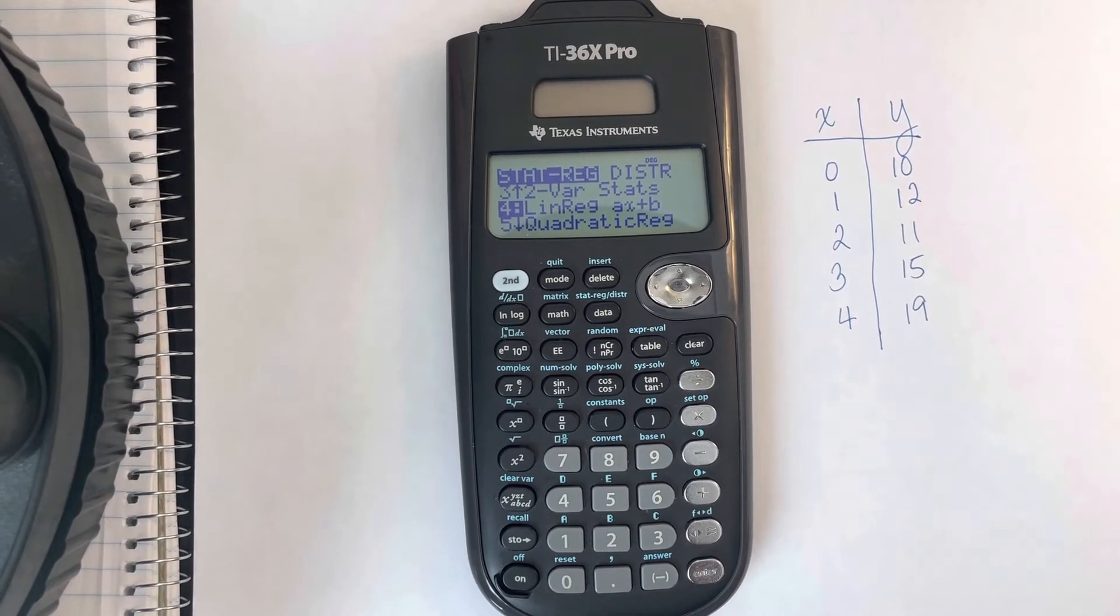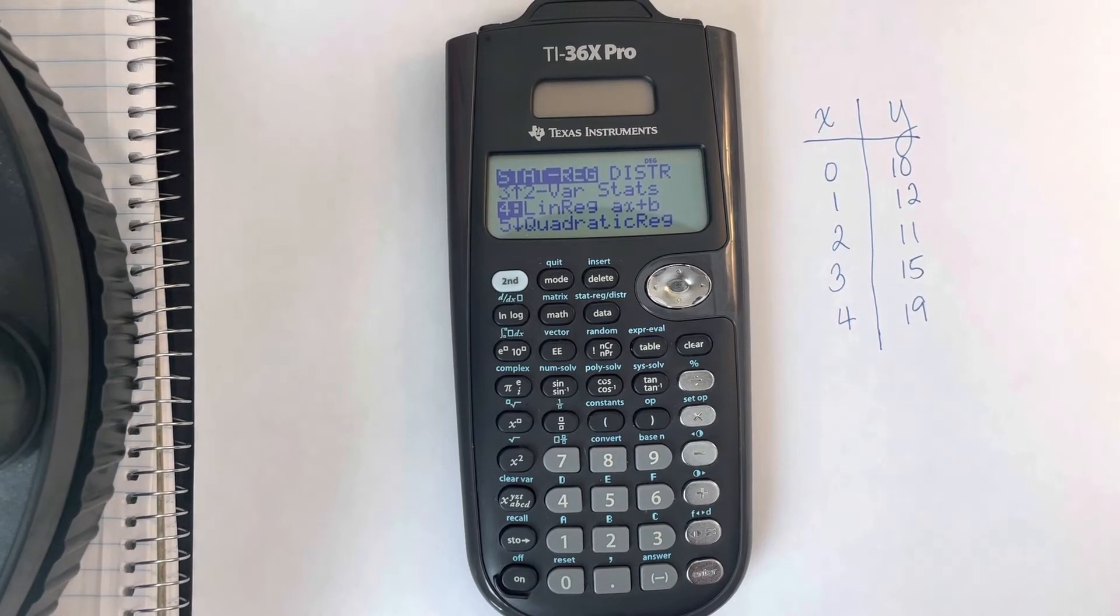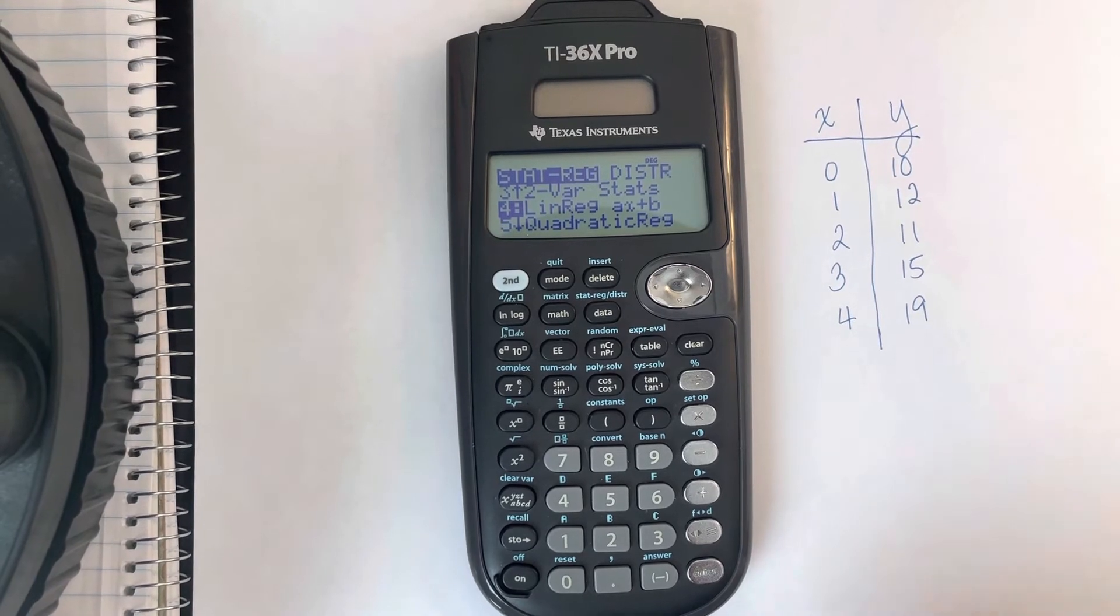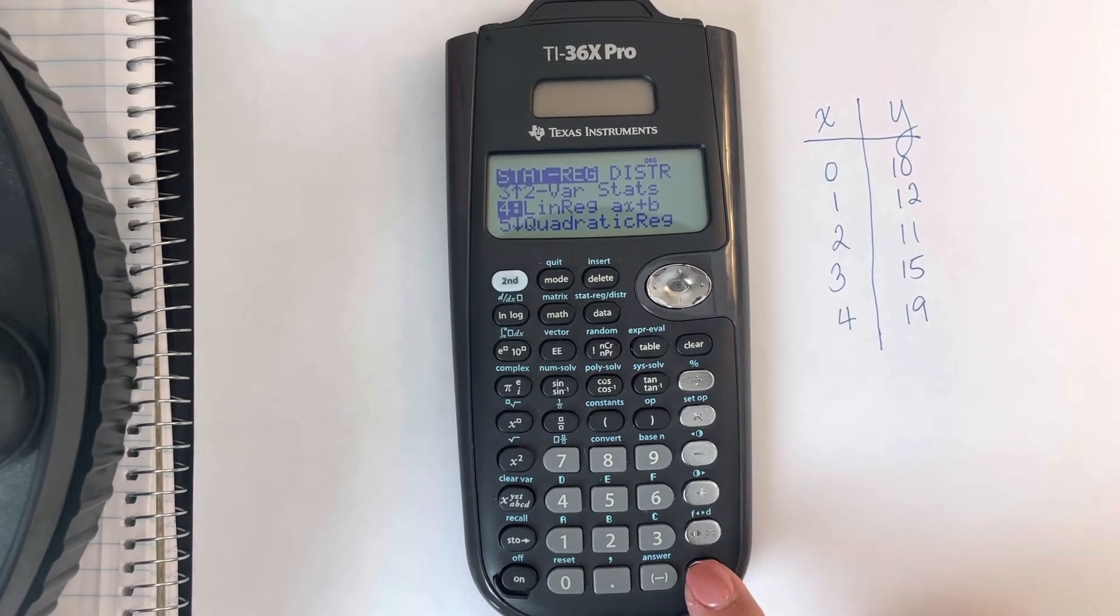If you watch the video for the TI-83 and 84, Linear Regression A plus BX treats A as the y-intercept and B as the slope. This command is going to reverse those assignments.